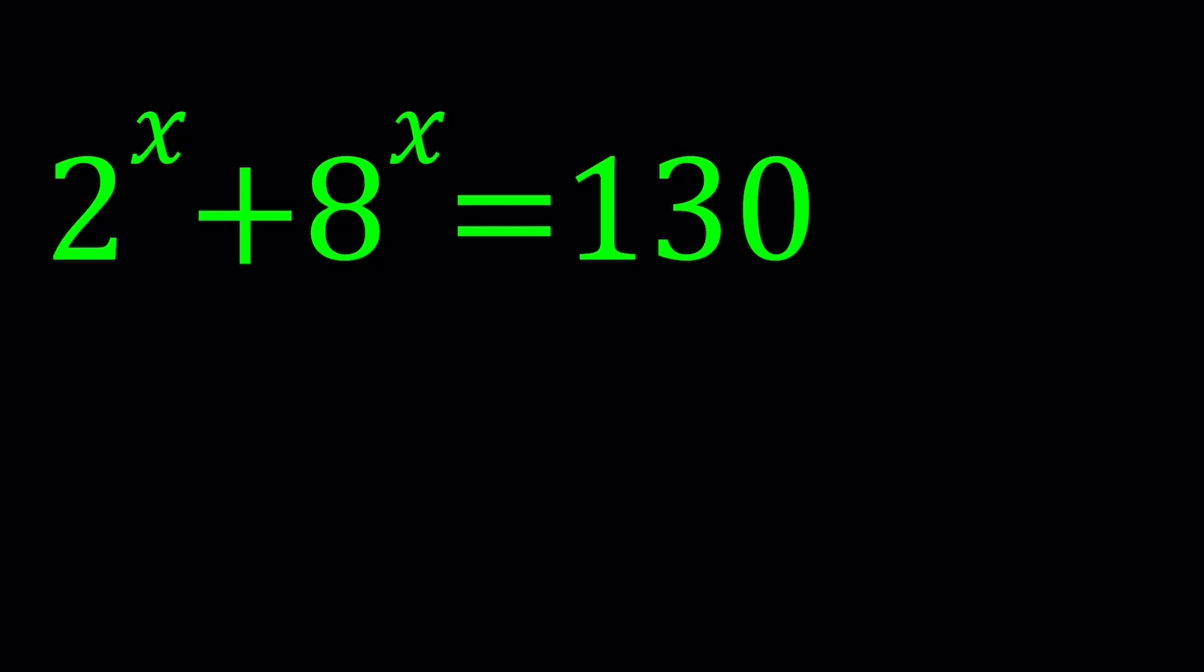First of all, I want you to notice that 2 to the power x and 8 to the power x are both increasing functions, because when you have an exponential function f of x equals b to the power x, and when b is greater than 1, then you do have an increasing function. Obviously, you don't want the base to be negative or 0. That's going to have some issues, but if b is between 0 and 1, then you'll have a decreasing function.